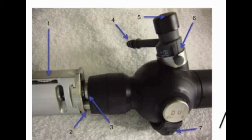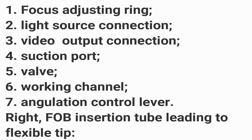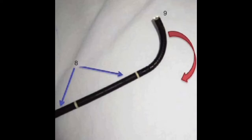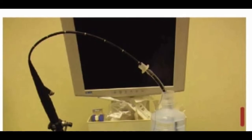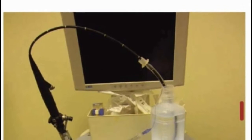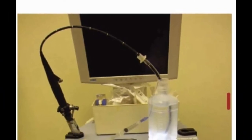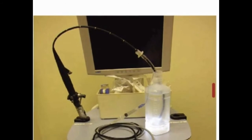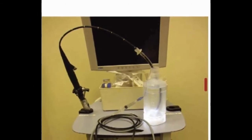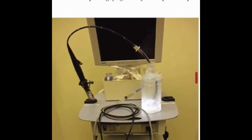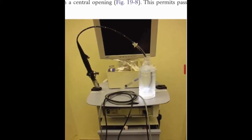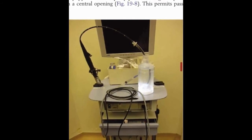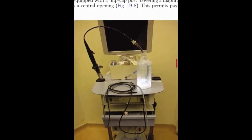Parts of the Fiber Optic Bronchoscope: There are three main parts — the handle, insertion tube, and flexible tip. An ideal fiber optic bronchoscope cart should comprise a light source, video monitor, endoscopy marks, bronchoscopy swivel adapter, oral intubating airway, bite blocks, atomizer, tongue blades, cotton tip swab, gauze, and soft nasal airways.